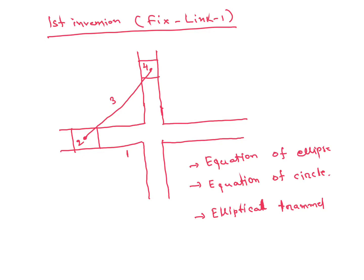In the first inversion, we fix link 1 — the frame. If we fix this frame, we will get the equation of an ellipse and the equation of a circle. If we take the point at the center of the connecting rod, we can also call this the Elliptical Trammel. So we have to remember: for the first inversion, fix link 1.